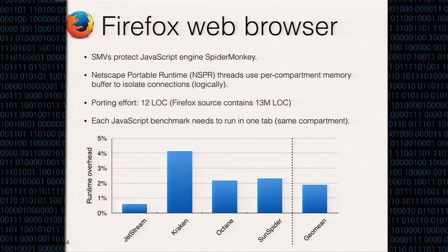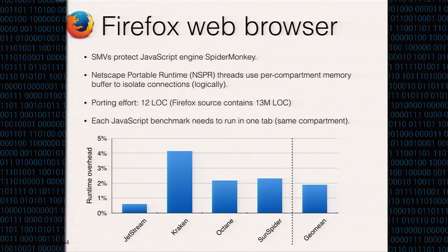As an alternative, we used SMVs to protect Firefox's JavaScript engine, SpiderMonkey, and introduced a new thread type called SMV threads to Firefox. We were able to add 12 lines of code changes and achieve strong isolation for compartments. We ran four different JavaScript benchmarks available online, each containing about 20 to 40 workloads. The SMVs trap each page fault to check the thread's access privilege. The result indicates that the overall performance overhead is about 2%, and we believe our prototype could be practical for production software.